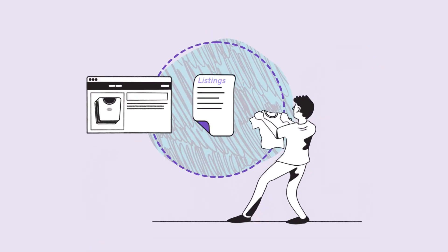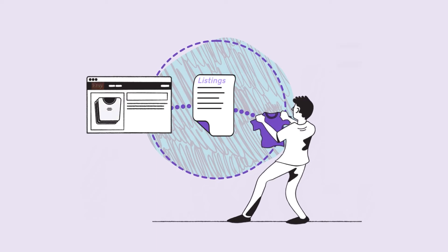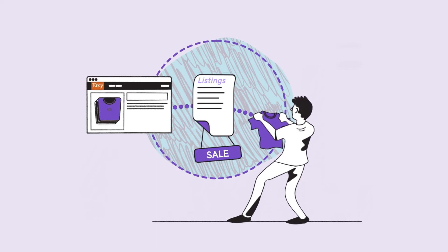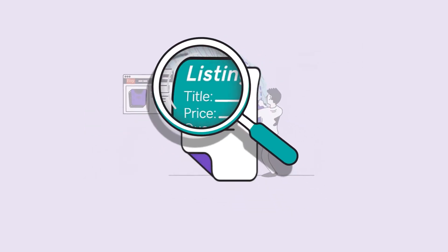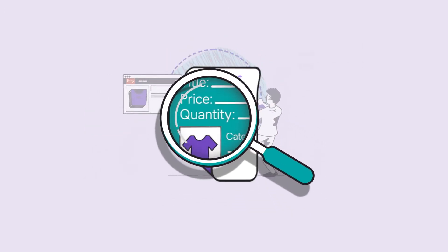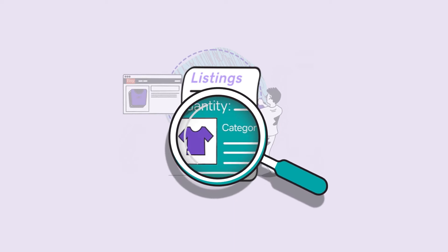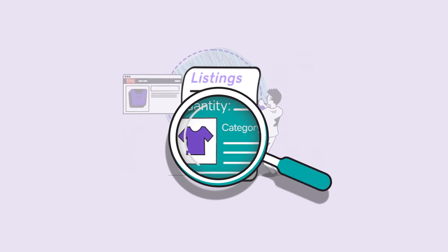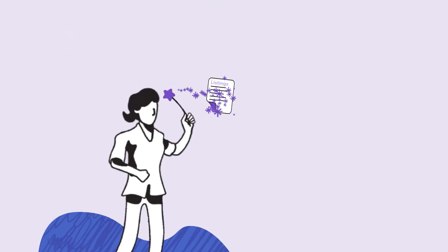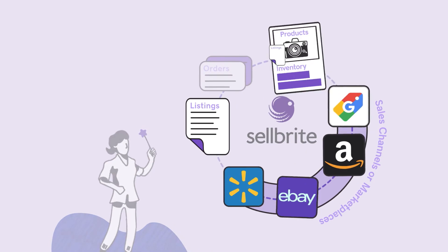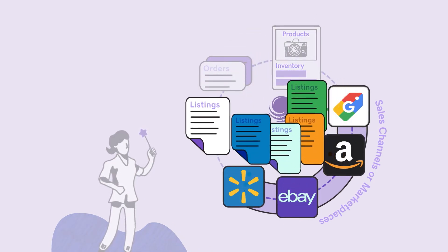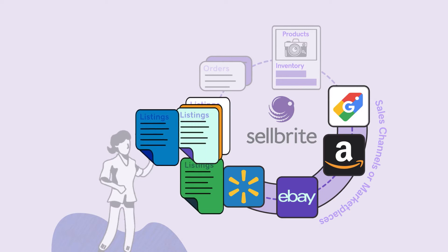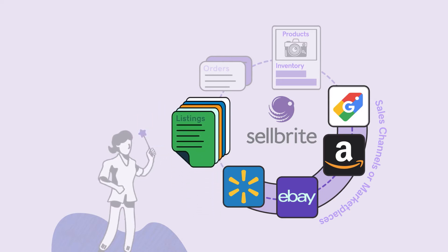Listings are the union between your products and your sales channels. They're essentially the offers for your products on the sales channels and contain pertinent product information like title, price, and quantity, as well as images and marketplace-specific information. You can create and publish new listings to the marketplaces from your products in Cellbrite, or import any existing listings you have on the marketplaces so you can manage them in Cellbrite.